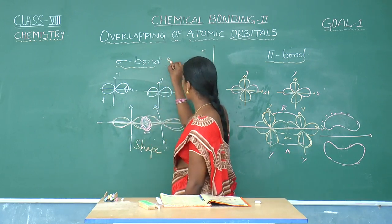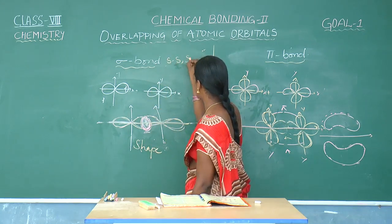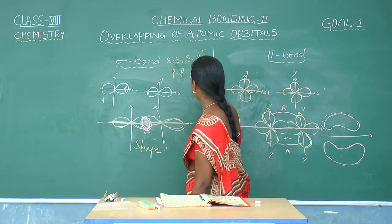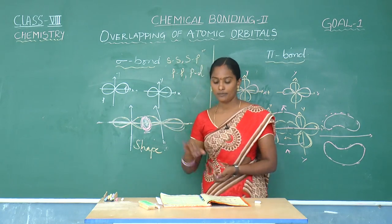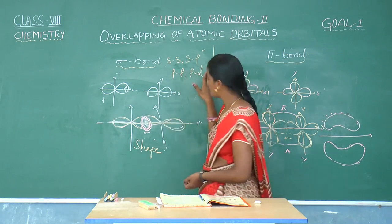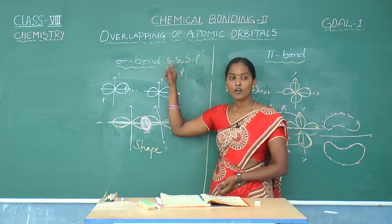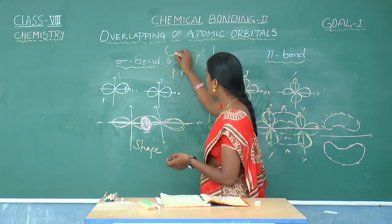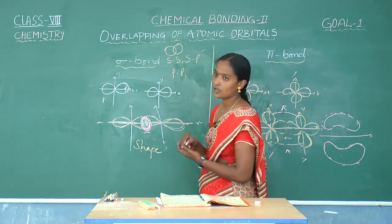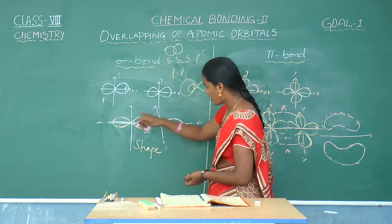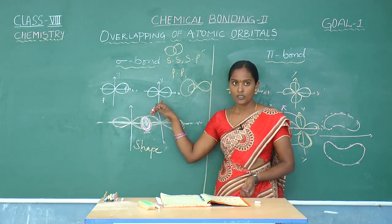A sigma bond is formed by the overlapping of S-S, S-P, P-P orbitals. By the overlapping of either one S orbital with one more S orbital, or one S orbital with one P orbital, or P orbital with P orbital, sigma bond will be formed.